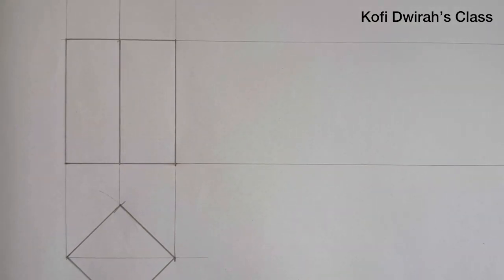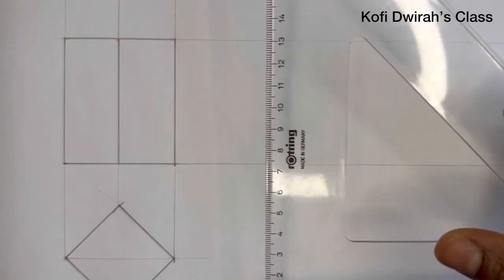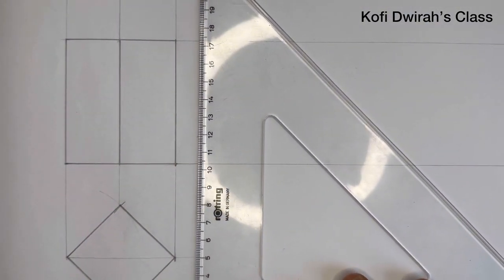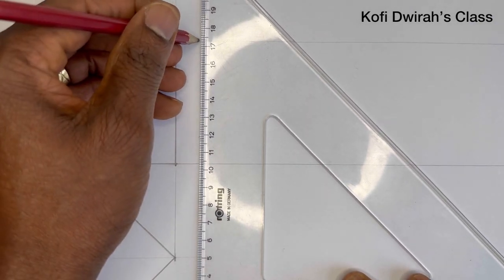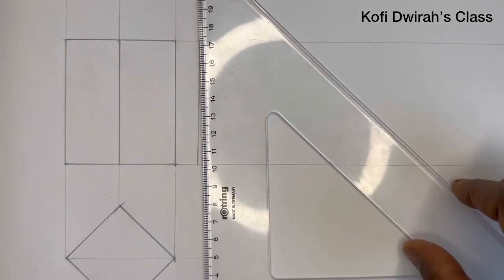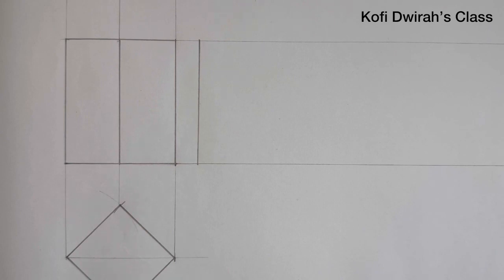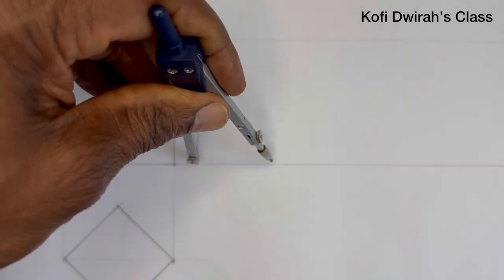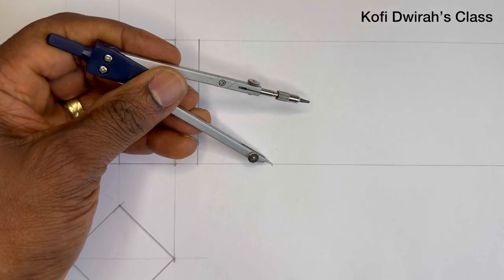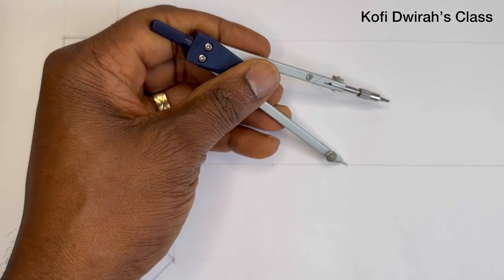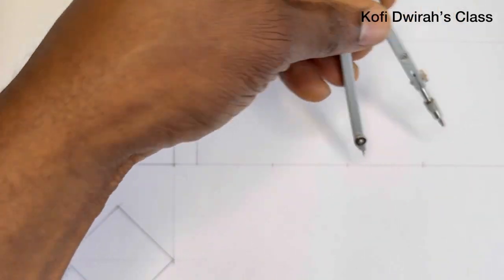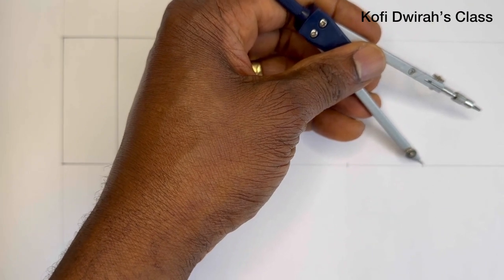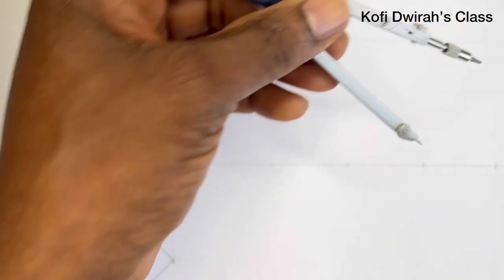Now we are going to draw the development of the surface. After extending these two lines, you first draw one side like this. Then with your divider or compass, measure one side of the square. Mark point one, point two, point three, and the last point — four sides in total.